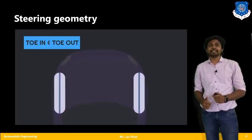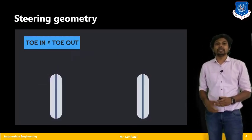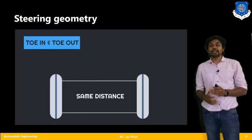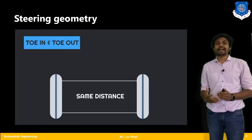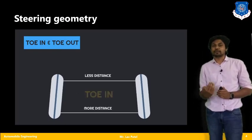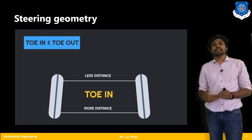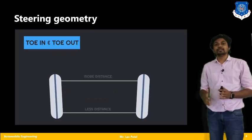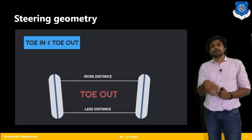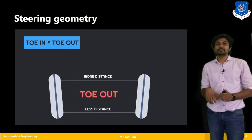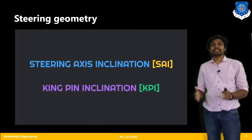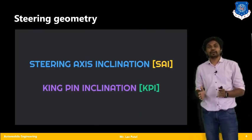The third topic is toe in and toe out. For this, we view the car from the top. We check the front tire distances — specifically the front portion and the rear portion of each individual front tire. The difference in these distances tells us the toe in angle and the toe out angle.